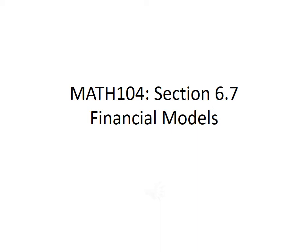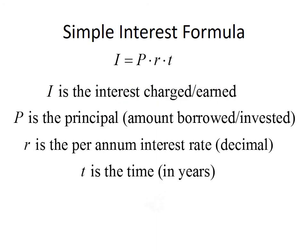In this lecture, we're going to talk about compound interest. We'll start by talking about several different formulas that can be used to compute interest. The first is called the simple interest formula, given by I equals P times R times T, where I is the interest charged or earned, P is the principal or the amount borrowed or invested, R is the per annum interest rate written as a decimal, and T is the time in years.